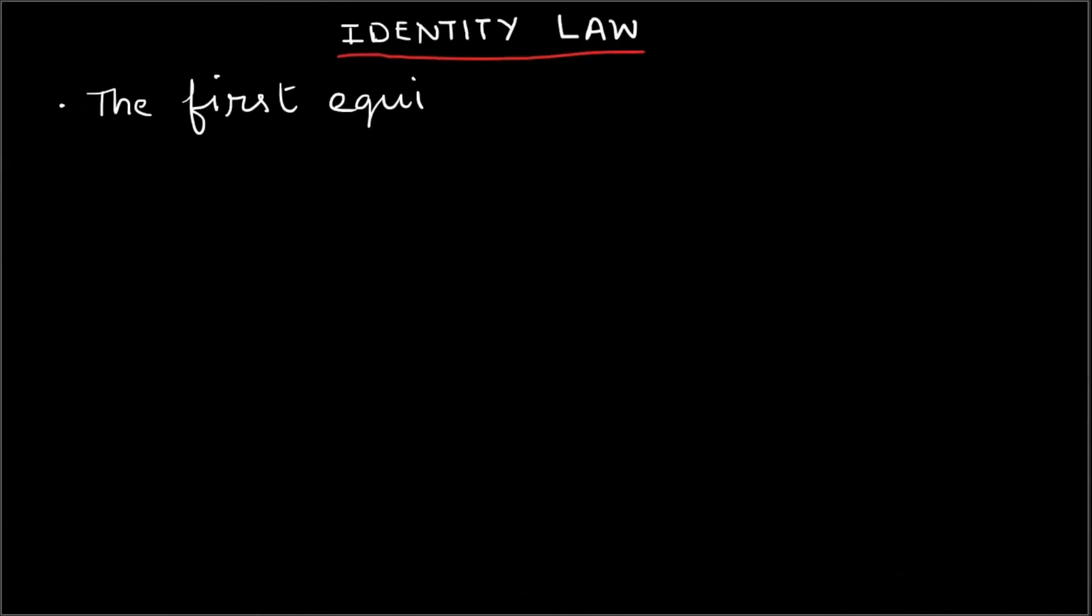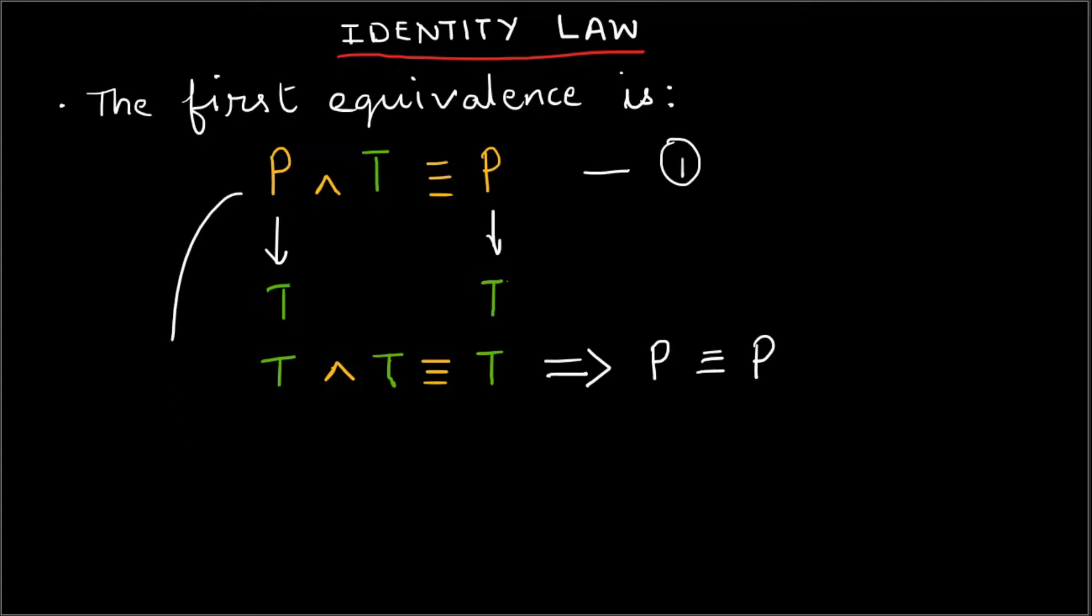The first equivalence is P and T is equivalent to P in identity law. If P is true, then both P and the other true statement gives true, which is the same as P. If P is false, the compound statement P and true becomes false, which is the same as P. The equivalence is true.